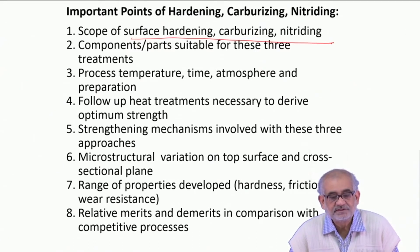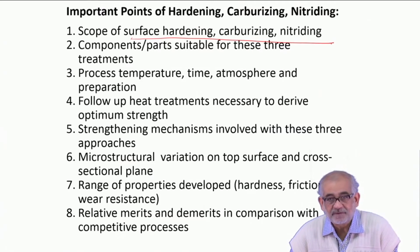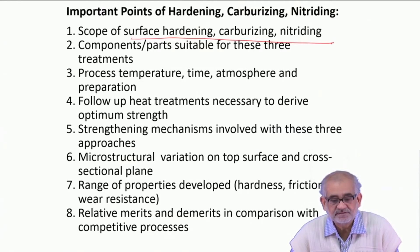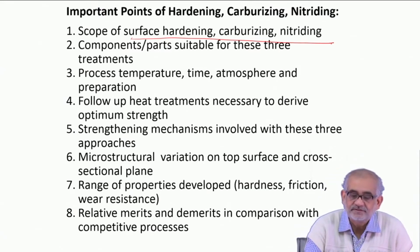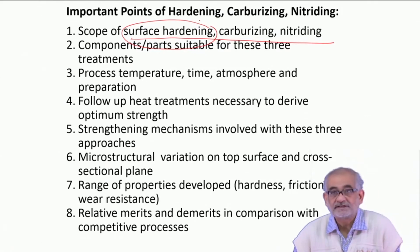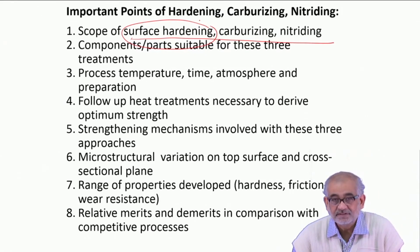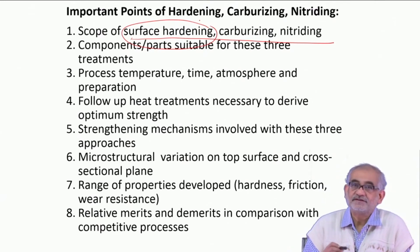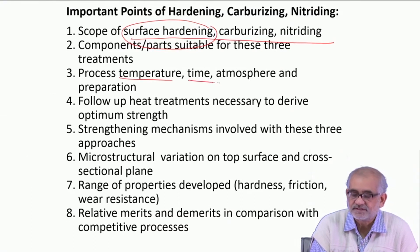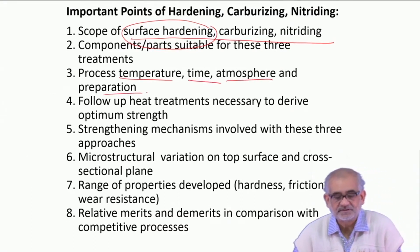The components and parts subjected to such treatments need not be exactly the same type. For hardening we require the component to have adequate carbon - at least around 0.4 percent carbon minimum - whereas carburizing and nitriding are done with very low carbon steel. The parts and their utilities will determine what kind of treatment you take, and the effectiveness will depend upon temperature, time, atmosphere, and various surface preparation methods.